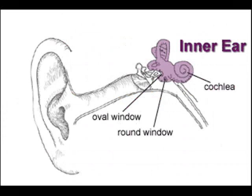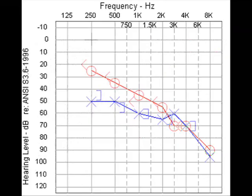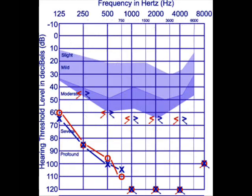When the inner ear gets affected, it leads to sensorineural hearing loss. A moderate sensorineural hearing loss audiogram looks like this, with both AC and BC affected. A profound sensorineural hearing loss audiogram looks like this.